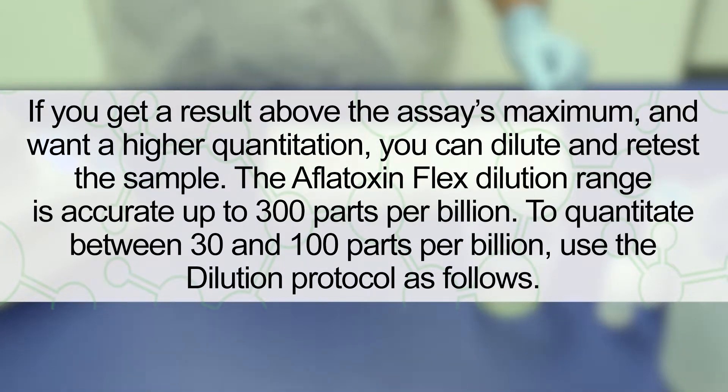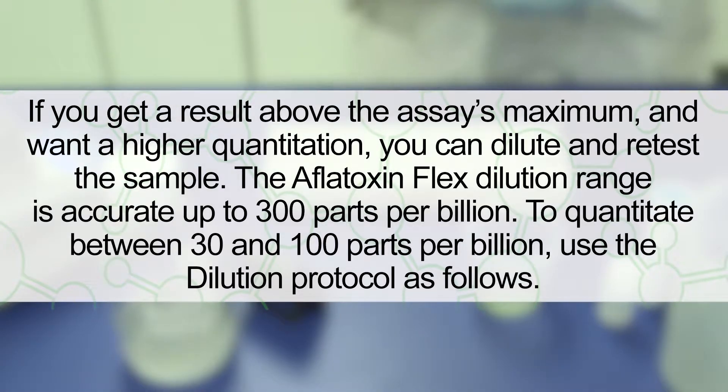The Aflatoxin Flex dilution range is accurate up to 300 parts per billion. To quantitate between 30 and 100 parts per billion, use the dilution protocol as outlined in the product insert for the specific matrix. In this video, we are diluting a corn sample.